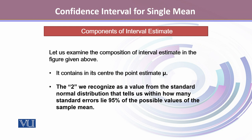The value 2 comes from the standard normal distribution and tells us within how many standard errors lie 95% of the possible values of the sample mean.